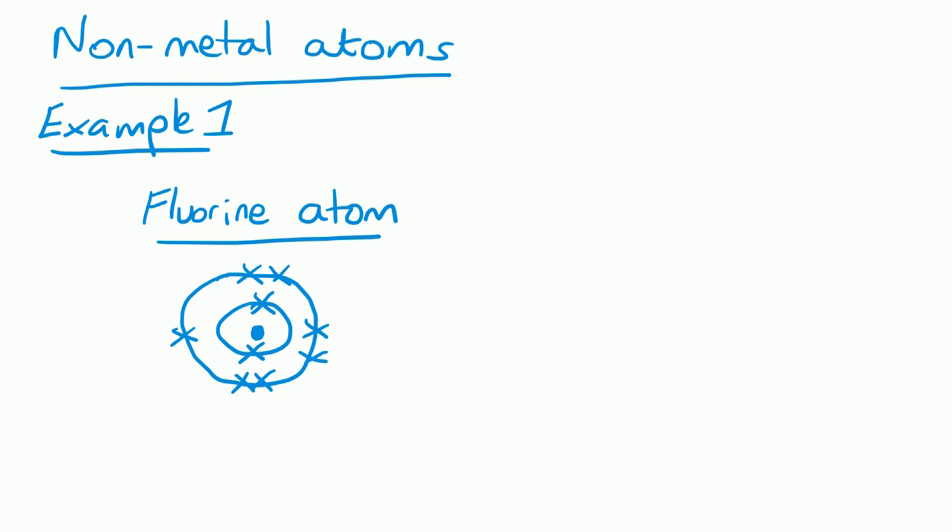Atoms have an overall charge of zero because they've always got the same number of positive protons in the nucleus and negative electrons on the shells. In the case of fluorine, we've got nine positive protons in the nucleus and nine negative electrons on the shells, so overall a fluorine atom has zero charge.